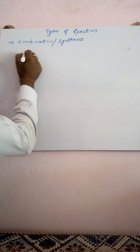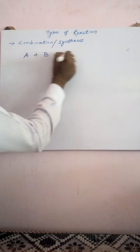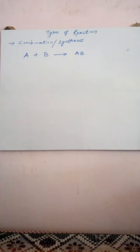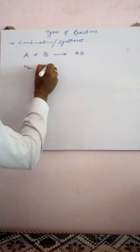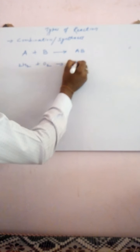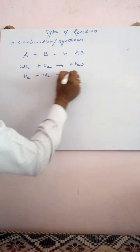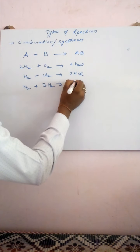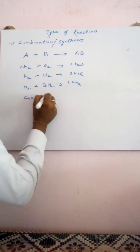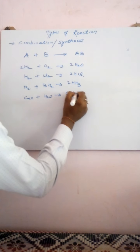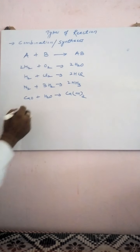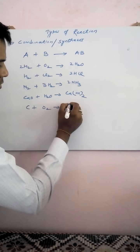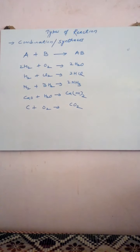In a very common way, we can understand A and B as substances that combine together to form an AB molecule, where A and B are reactants that combine to form AB as the product. For example: H₂ + O₂ gives 2H₂O; H₂ + Cl₂ gives 2HCl; N₂ + 3H₂ gives 2NH₃. These are some examples of combination reactions.